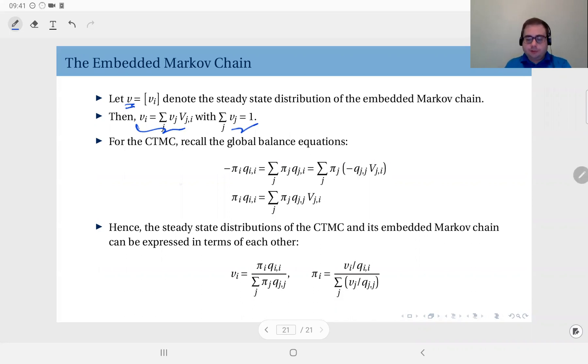global balance equations in this way. You see, q_ji can be written as minus q_jj times v_ji, and therefore we have this relationship. Based on this, you can write